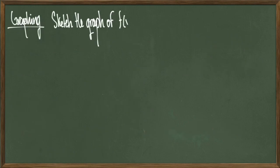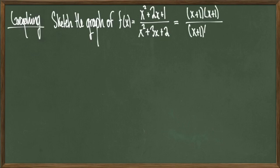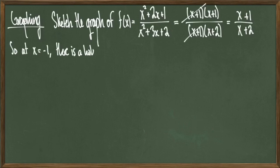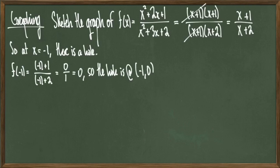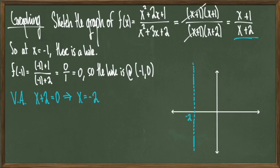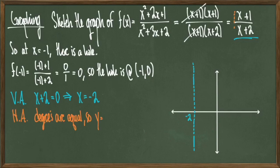In this next example, we're going to sketch the graph of f of x equals x squared plus 2x plus 1 over x squared plus 3x plus 2. We already saw that this simplifies to x plus 1 over x plus 2, and there is a hole at x equals negative 1. Evaluating f at negative 1 gives 0, so the hole is at the point negative 1, 0. To find vertical asymptotes, I look at the denominator of the simplified function: setting x plus 2 equal to 0 gives a vertical asymptote of x equals negative 2. Looking at the original function, the degree of the numerator and denominator are both 2, so the horizontal asymptote is y equals 1 over 1, which equals 1.